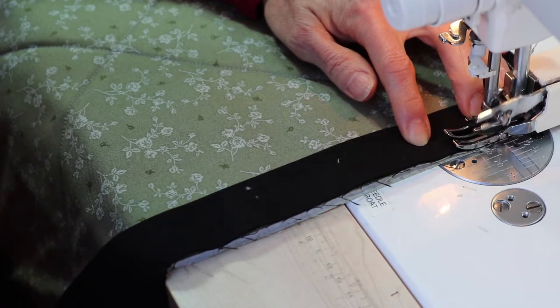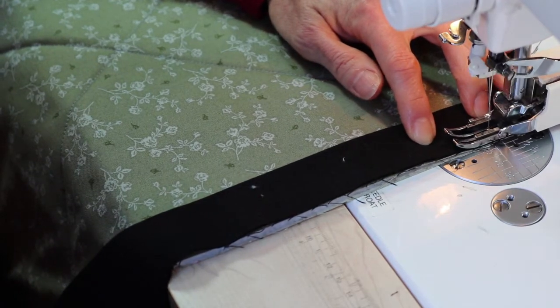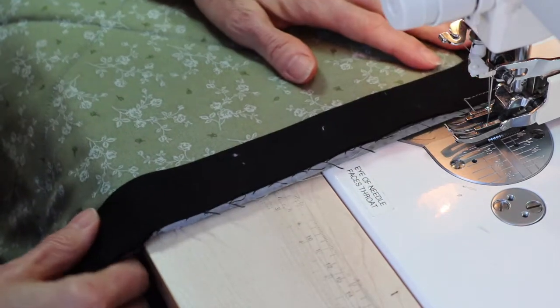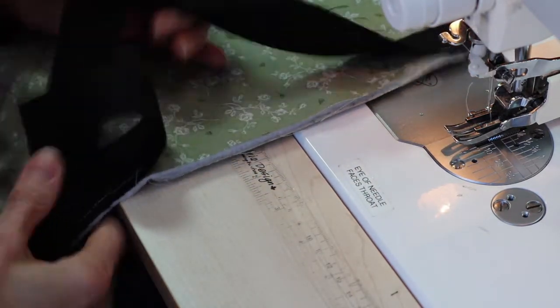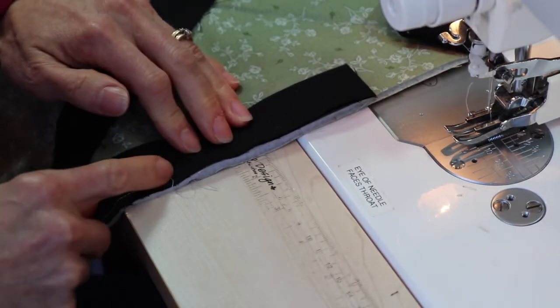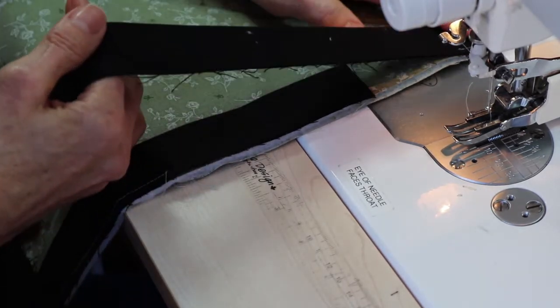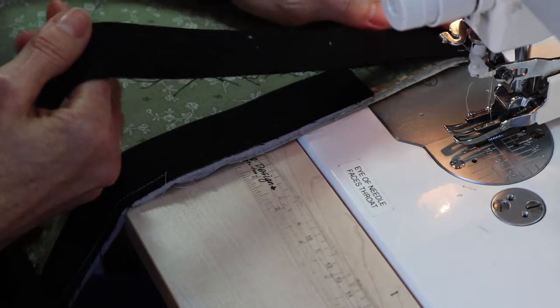Now you're just sewing I'm gonna say six to twelve inches away from your original sewing point and then we're going to take our quilt up to our ironing board.